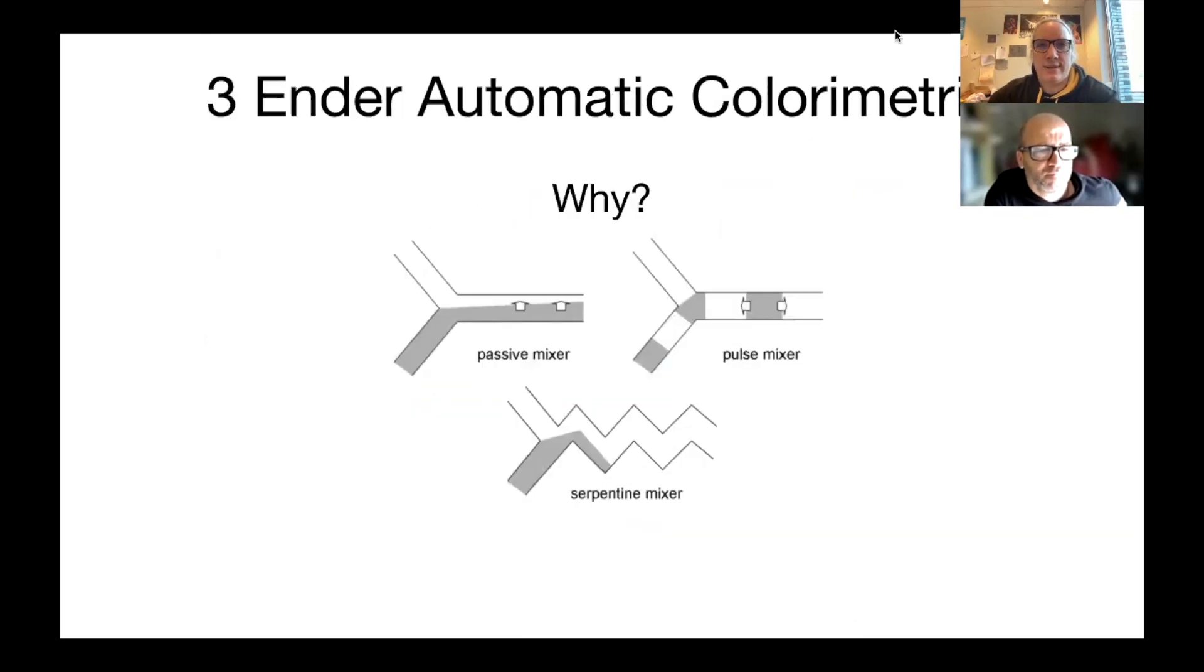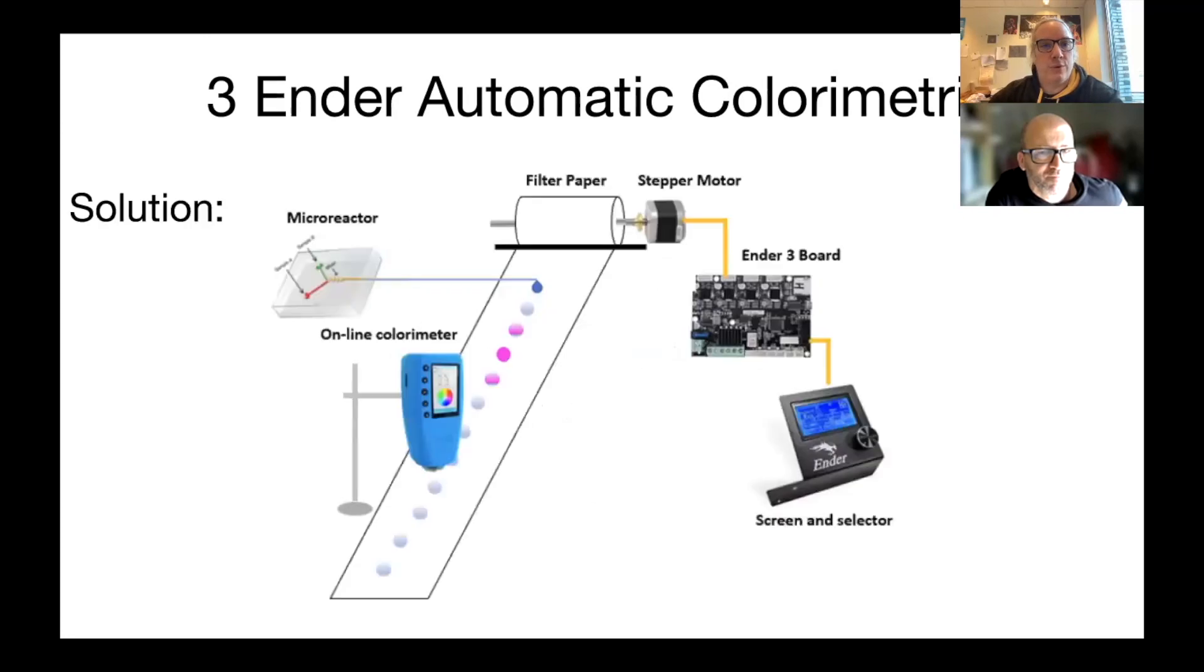All right, then the last one, it's an Ender 3 for automatic colorimetric detection. So in this, you want to use a mixer, microfluidic mixer. You mix a color and which one is the best mixer. For doing this, the idea is to have some, probably, hopefully a syringe pump connected to the micro reactor or microfluidics. You have the mixer and you spill some droplets on a filter paper. This filter paper is connected to a stepper motor, so it's moving in one direction. And you have a colorimetric detection for those spots. So everything should be automatic here and also controlled by G-codes. So you have probably three motors here and one motor for moving the filter paper.